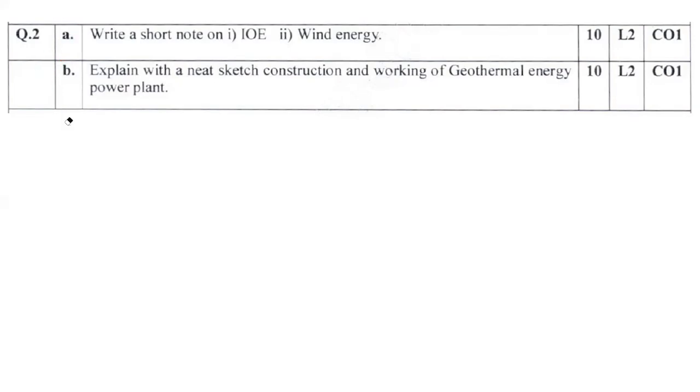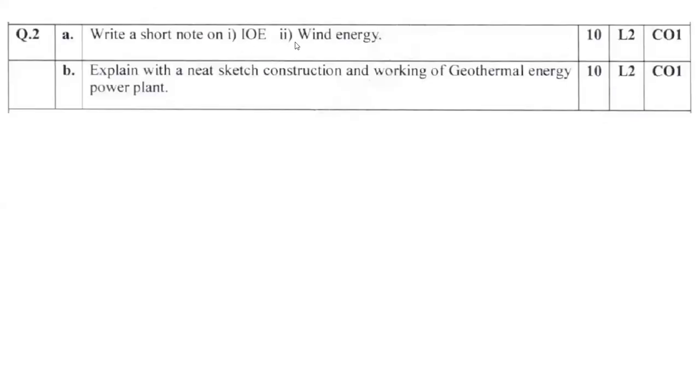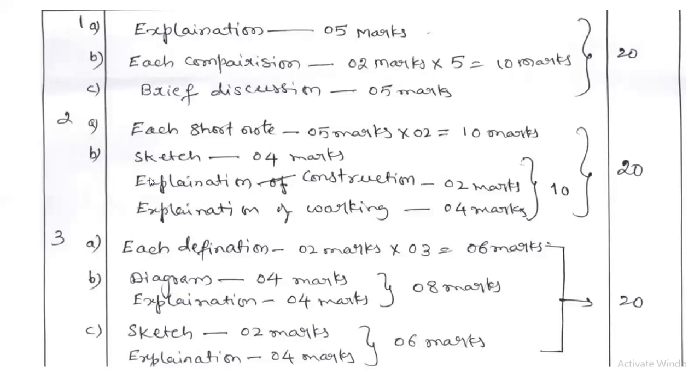Figure plus explanation carries 10 marks, 5 plus 5. The answer key for Question 2: each short note 5 marks times 2. IOE 5 marks, wind energy 5 marks. For 2B, sketch 4 marks, explanation of construction 2 marks, explanation of working 4 marks, altogether 10 marks. Pay attention to how marks are distributed. 10 marks means at least one and a half pages, around 600 words.